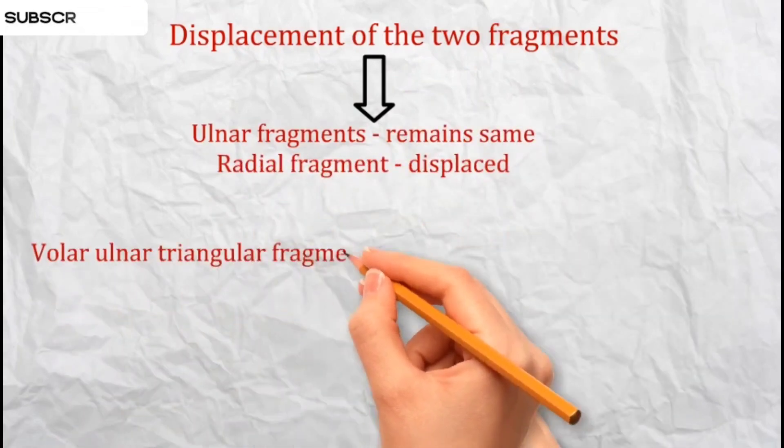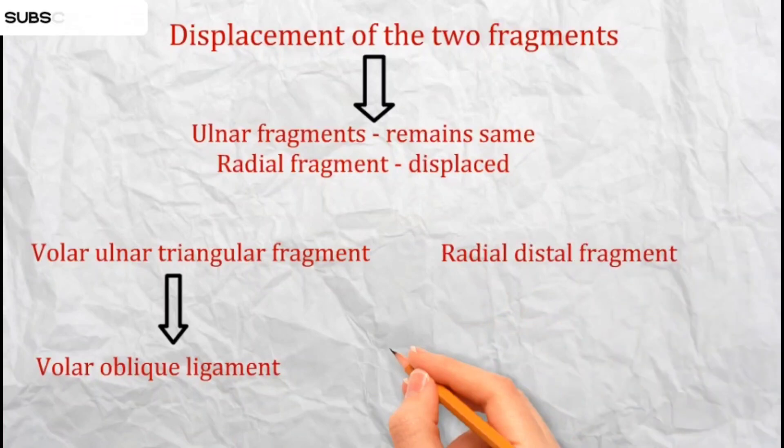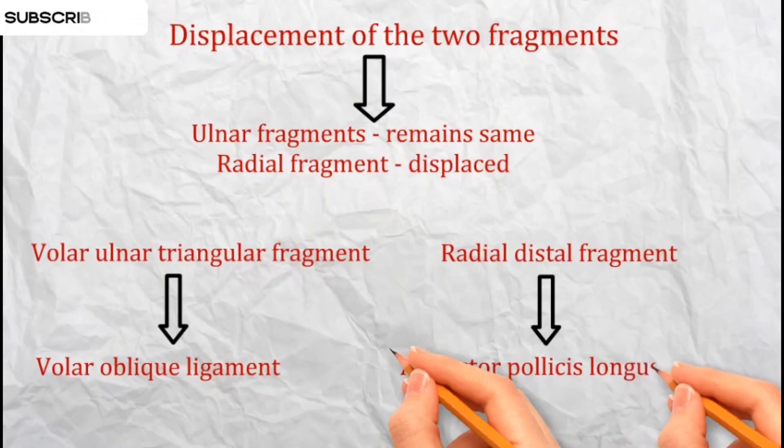The volar ulnar triangular fragment is held in place by the volar oblique ligament, while the radial distal fragment is displaced radially, dorsally, and proximally due to the pull of the abductor pollicis longus tendon.